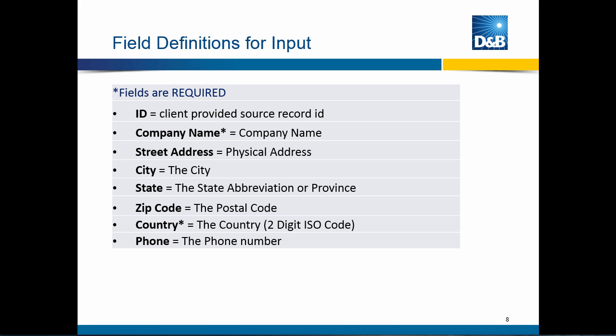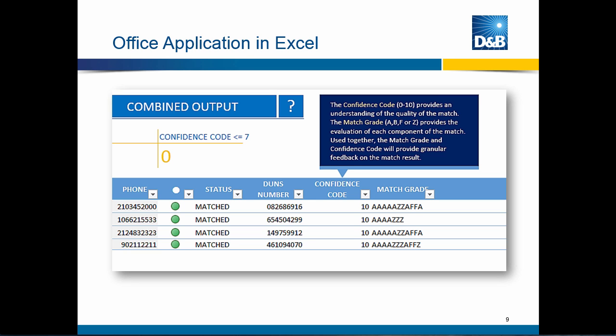The field definitions for input are listed here. Company name is required, and the country code is required — there's a reference in the template that gives you the two-digit ISO codes for countries. You also put in the state if it's in the United States, which is required for US records. Once you've run the verification, you'll get back whether the records were matched or not, the DUNS number, the confidence code which indicates the quality of the match (10 is higher), and the match grade, which is a very fine-grained detail about how the match was done — explained in the documentation.